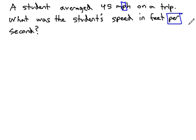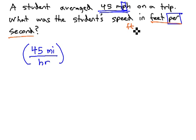Here, we have a student who averages 45 miles per hour on a trip. We want to know what is the student's speed in feet per second. First, we will make those 45 miles per hour into a fraction: 45 miles per is the fraction bar, and then hour is what goes underneath it. Miles per hour is miles over hour. Also, looking at what we're going for is feet per second. We want feet per second, or feet over seconds.